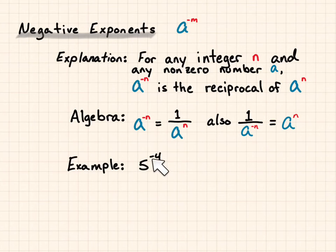Example. 5 to the negative 4 becomes 1 over 5 to the 4th. a to the negative 4 times a to the 3, I get a to the negative 4 plus 3, which gives me negative 1. And a to the negative 1 becomes 1 over a.